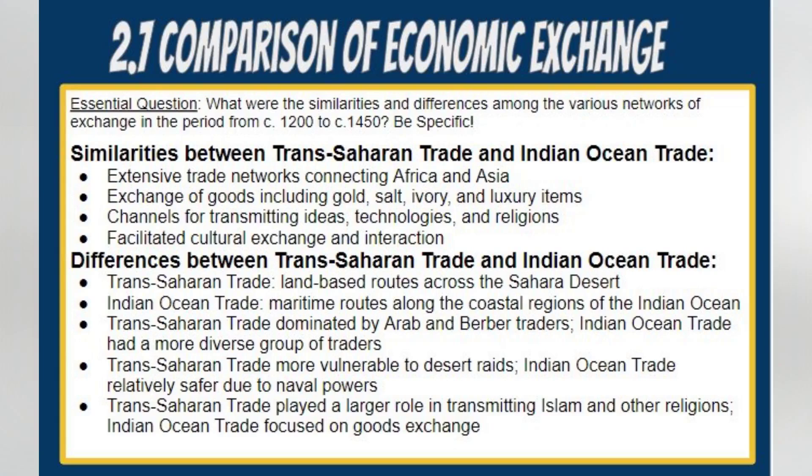Security posed contrasting challenges for these trade networks as well. The Trans-Saharan trade faced vulnerability to raids and attacks by desert bandits, while the Indian Ocean trade enjoyed a relatively safer environment due to the protection offered by powerful naval forces, such as the Chinese and the Indians. In terms of their influence on religion, the Trans-Saharan trade played a more significant role in the transmission of Islam and other religions across regions, while the Indian Ocean trade, though not devoid of religious influence, placed greater emphasis on the exchange of goods.